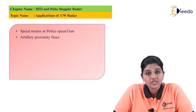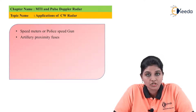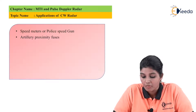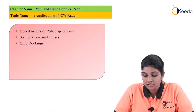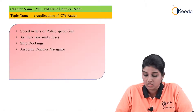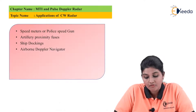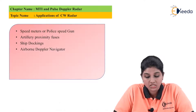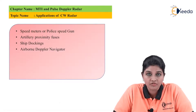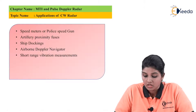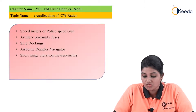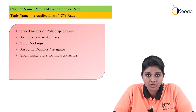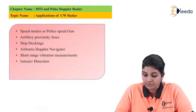The second application of the continuous wave radar is proximity fuses. The next application is ship docking. The next area of application is airborne Doppler navigation. The continuous wave radar is also used for short range vibration measurement, which is considered a non-contact measurement system.